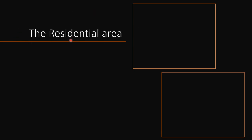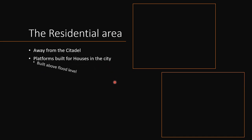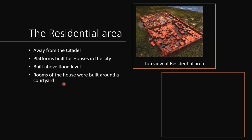The residential area is where the common people of the city used to live, a little away from the citadel. Platforms were built for houses so that they could be constructed above flood level — if there was a flood, the houses would not be disturbed. The rooms of the house were built around a courtyard, as you can see in this top view.